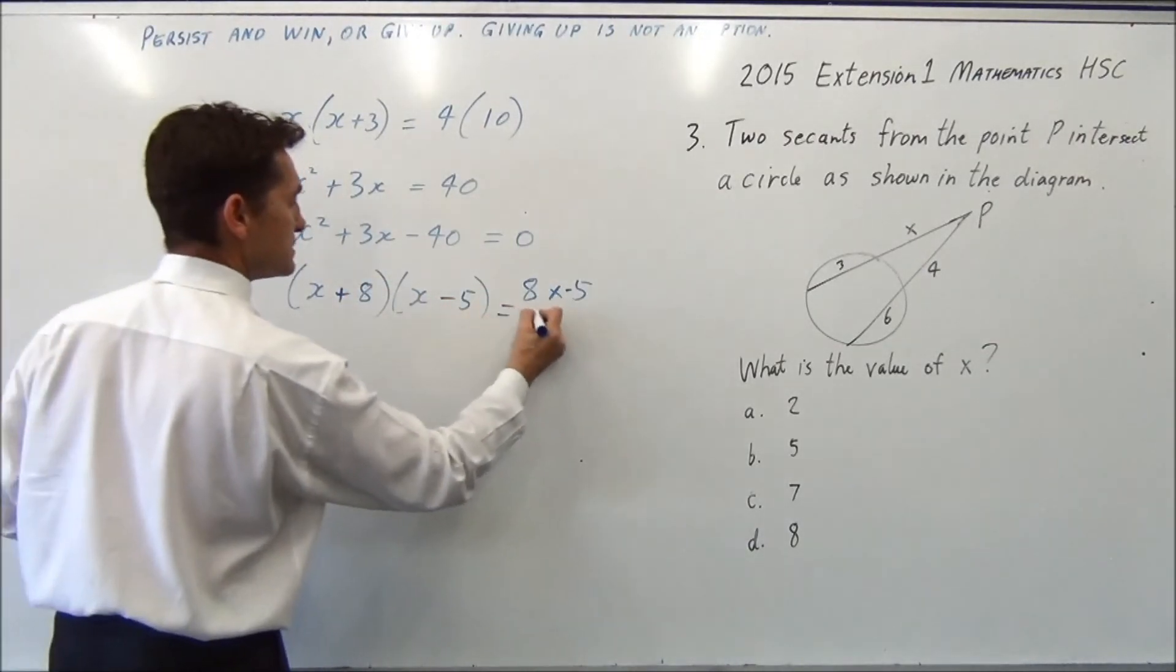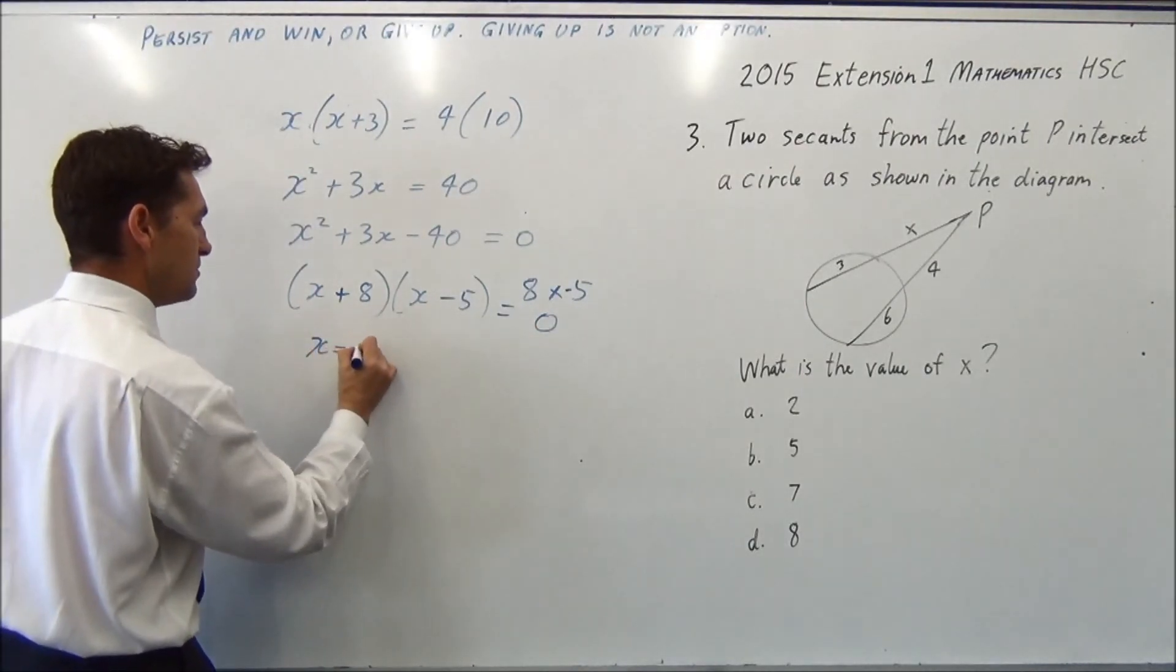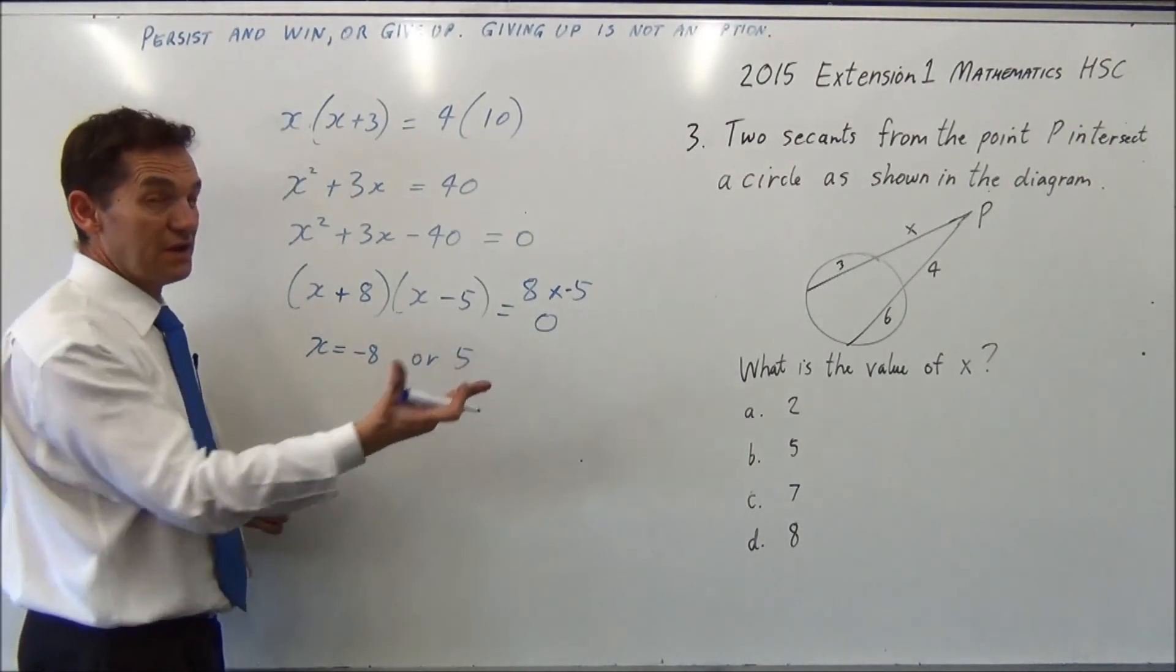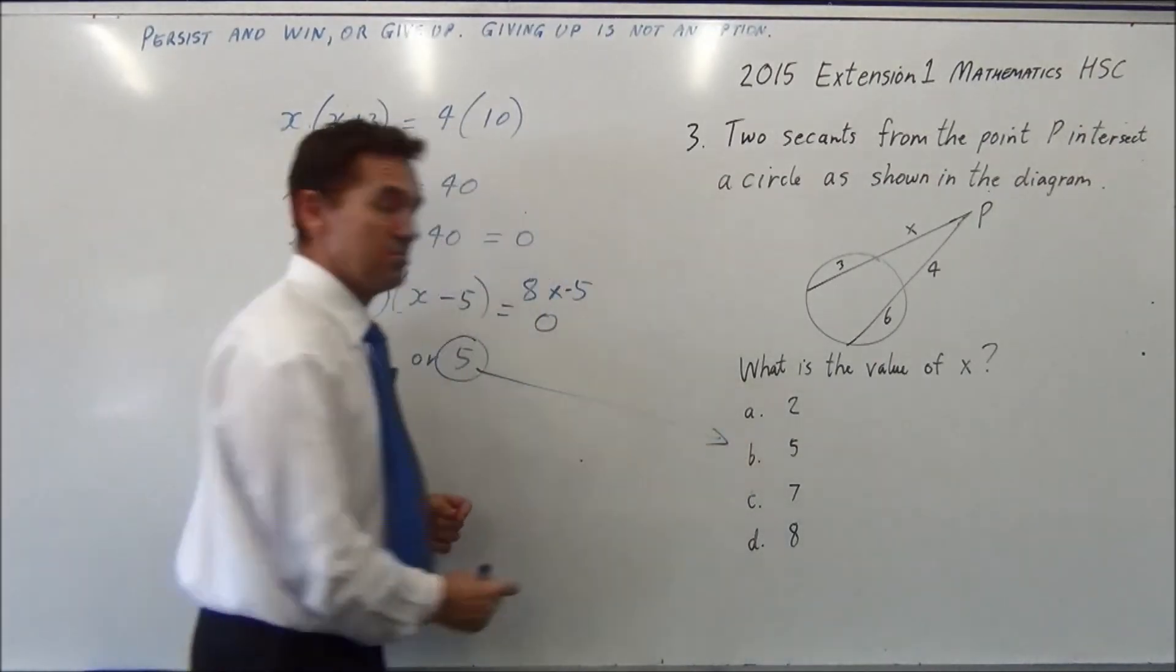So that's our factorisation, which equals 0. So then x can equal minus 8, or 5. You've got minus 8 or 5, you can't have a negative length, so the answer must be 5, which is b.